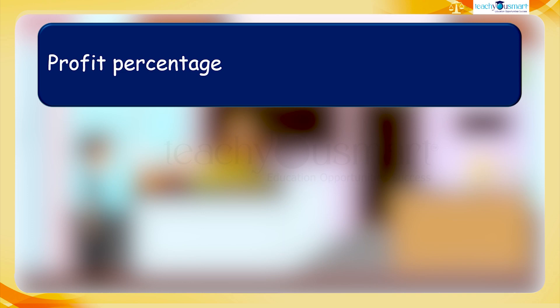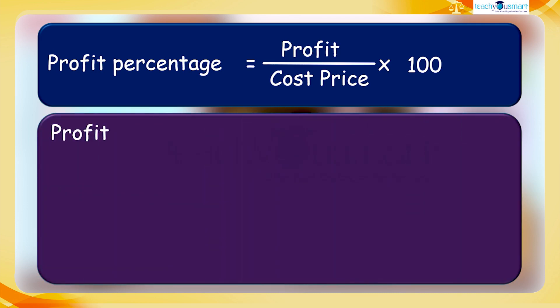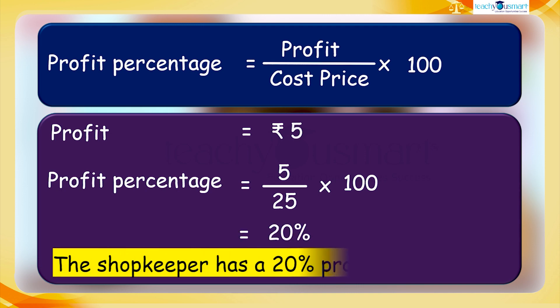Now let's calculate the profit percentage. For calculating the profit percentage, we divide the profit by cost price and multiply by 100. We have already calculated the profit — profit equals 5. Profit percent equals 5 divided by 25 multiplied by 100, equals 20 percent. Thus the shopkeeper has a profit of 20 percent.